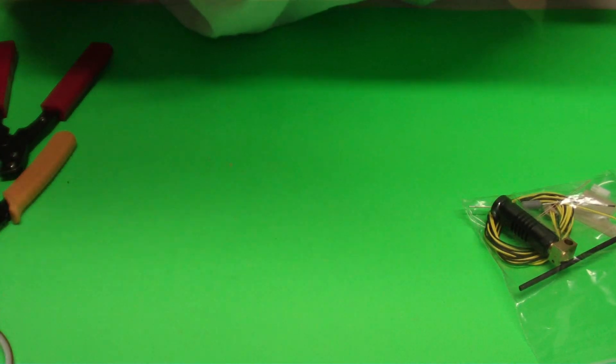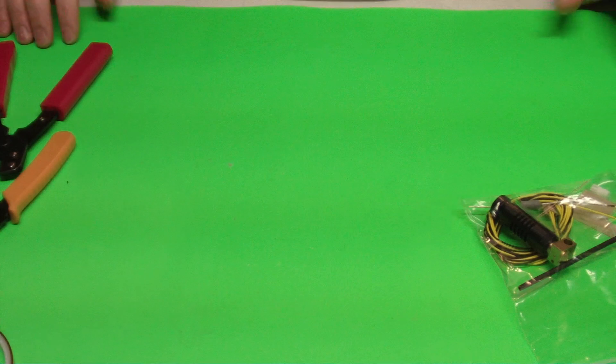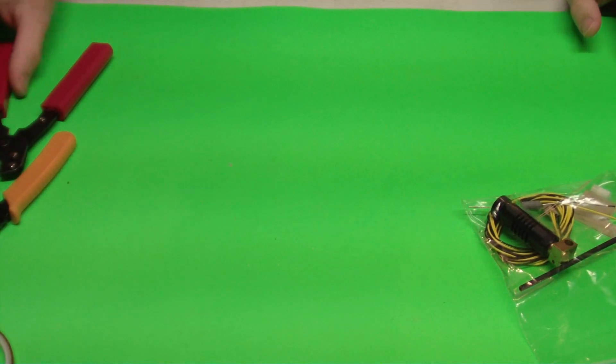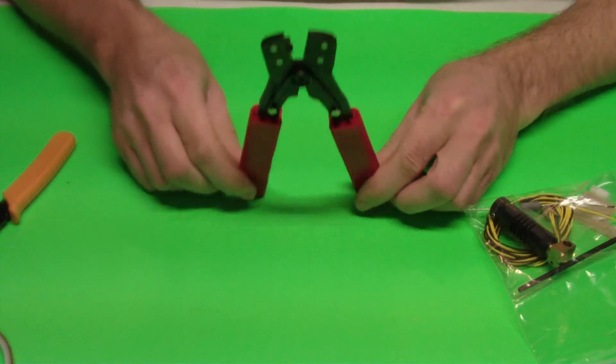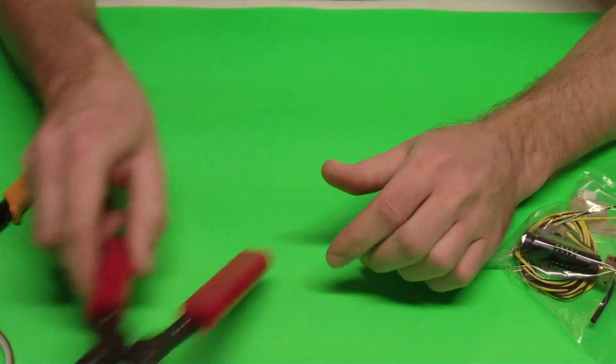Hello, this is Colin with Maker Farm. Today we're going to show you how to build a J-Head hot end. To do that, you're going to want to get a few tools.